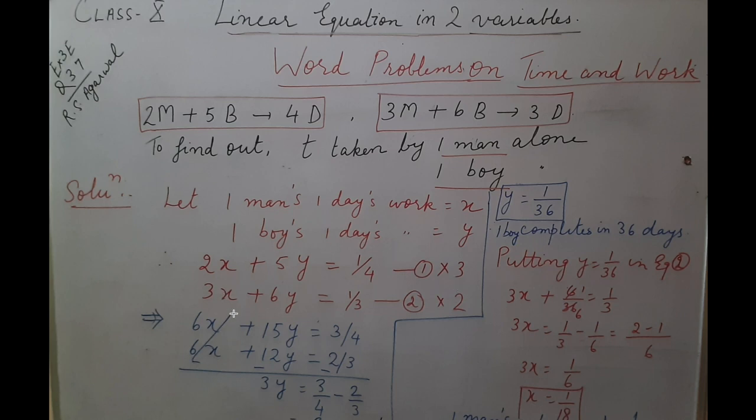We cancel the coefficient of x and subtract the equations. Then 15 minus 12 is 3, and then we subtract this fraction. So we are getting 1 by 12.